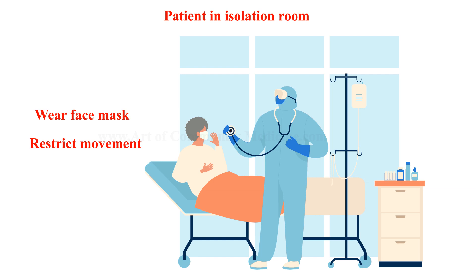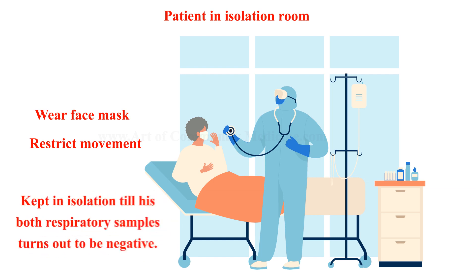Washroom facilities with attached urinals should be available in all isolation rooms. Separate portable stethoscope, X-ray, CT units, and USG machines should be dedicated for patients suffering from COVID-19. The patient needs to be kept in isolation until both respiratory samples turn out to be negative.